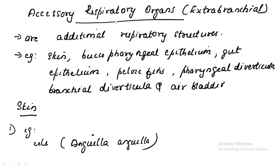Accessory respiratory organs are the organs or structures that support respiration in some fishes to take atmospheric air. This portion can be an essay question in your examination, so it is very important. They are additional respiratory structures. The structures modified to support respiratory function in fishes include: skin, bucco-pharyngeal epithelium, gut epithelium, pelvic fins, pharyngeal diverticula, branchial diverticula, and air bladder.